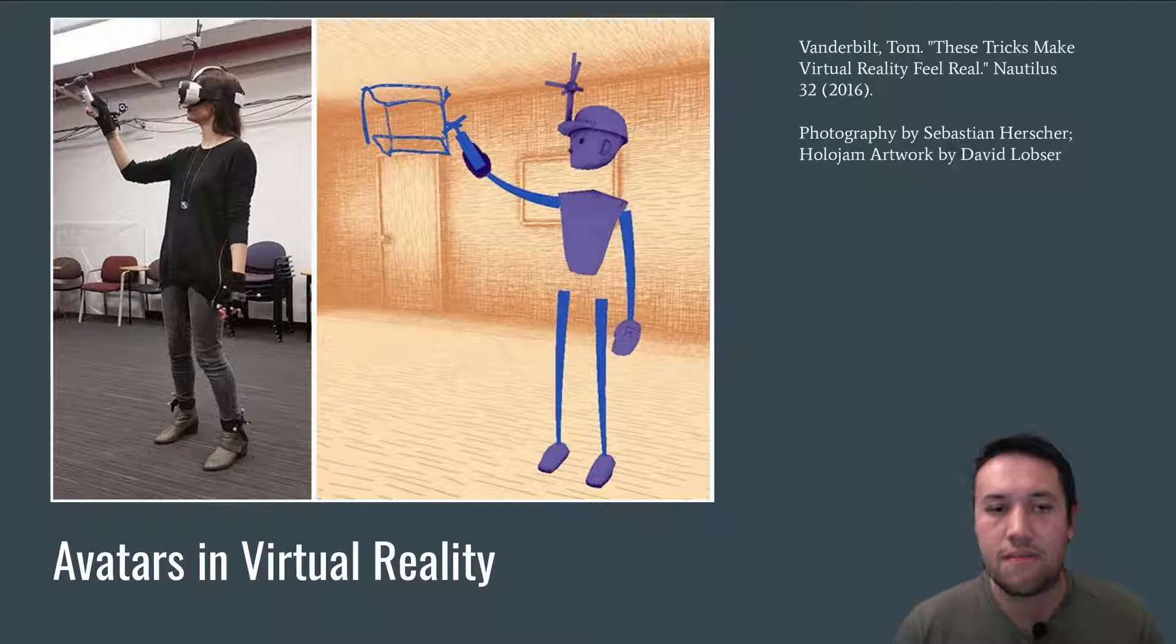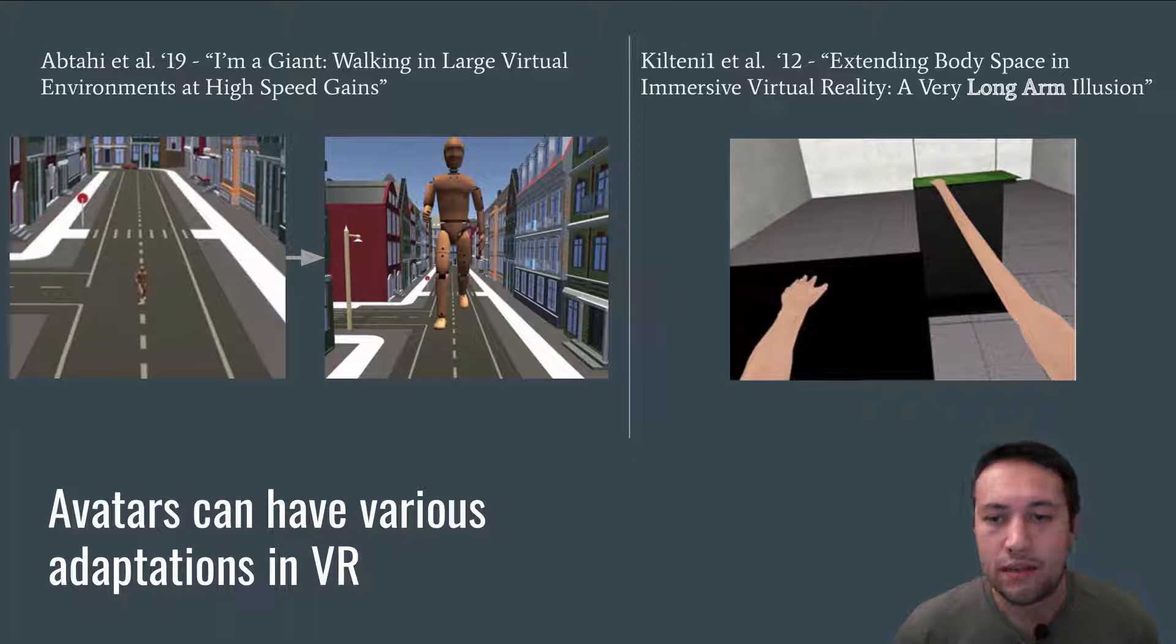There are many ways in which we can adapt an avatar. By adaptation I mean changing the shape of the avatar in some way, such as by scaling it or stretching the arms, as shown in these two examples.